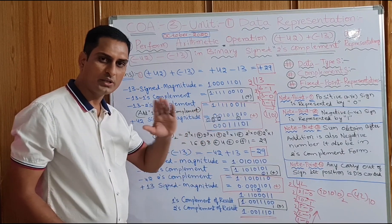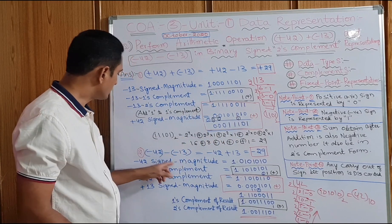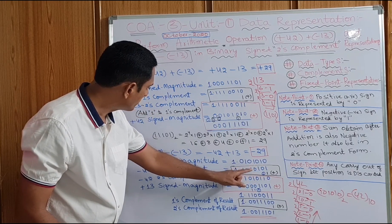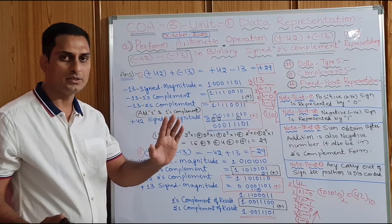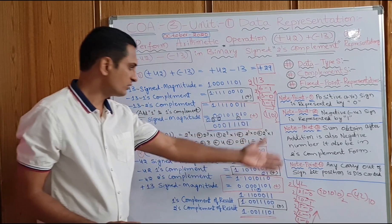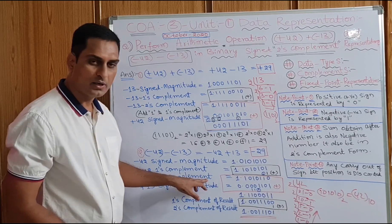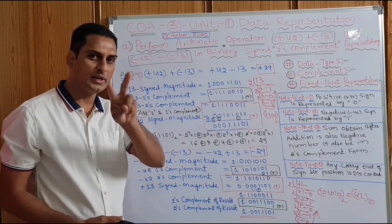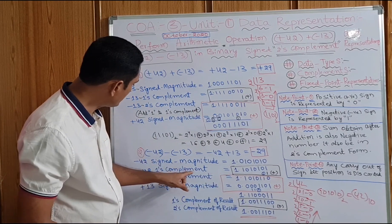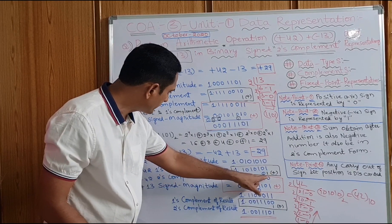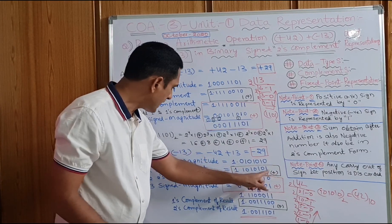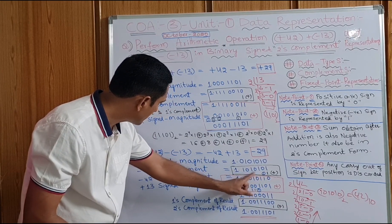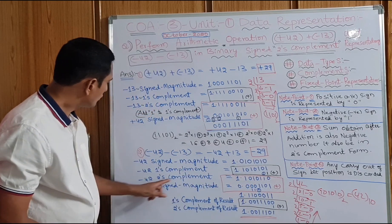Now 42's 1's complement — same story. Change 1's into 0 and 0's into 1 for the signed magnitude bits: 0 becomes 1, 1 becomes 0, 0 becomes 1, 1 becomes 0, 0 becomes 1, 1 becomes 0, 0 becomes 1. Sign value should not be changed. And 42's 2's complement: add 1 to the 1's complement to get 2's complement. The result is 1, 0, 1, 1, 0, 1, 1, 0.